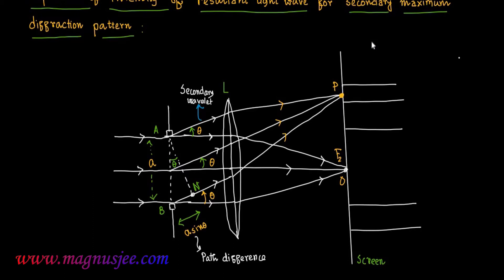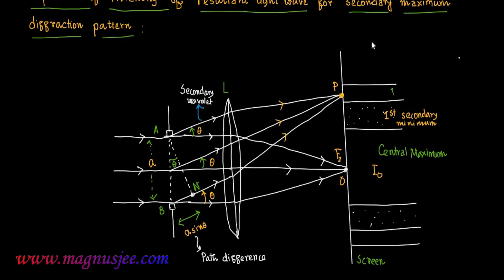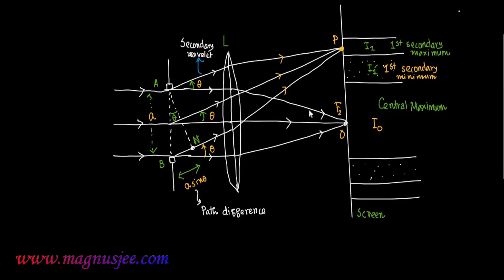At P, a secondary maximum diffraction pattern is formed. Around the point O, at which refracted rays converge without any deviation, the central maximum is formed. In this way we get the diffraction pattern. The central maximum has intensity I0. The first secondary minimum has intensity I1 prime, and the first secondary maximum has intensity I1. There will be alternate bright and dark fringes in the diffraction pattern.